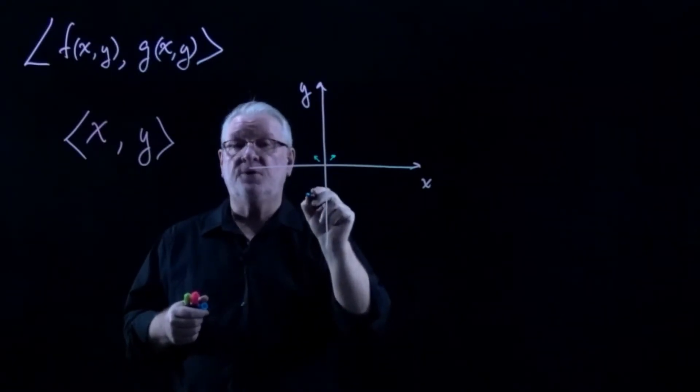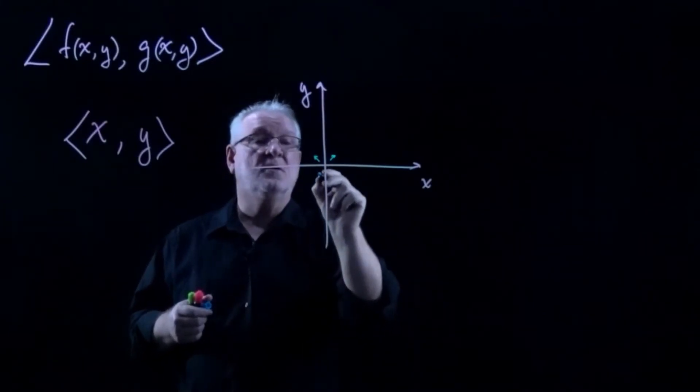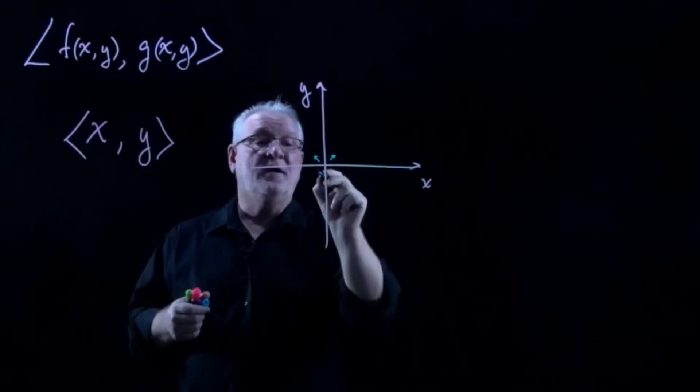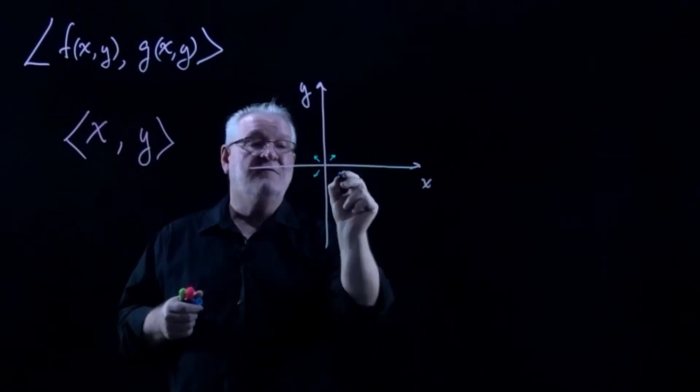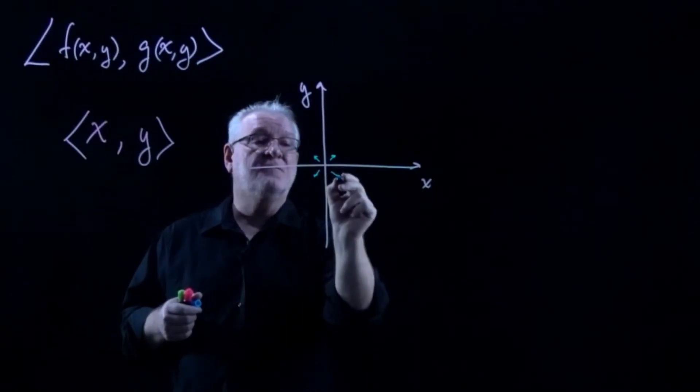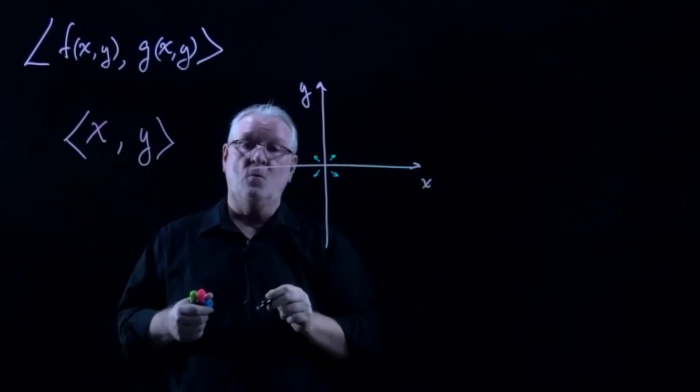If we go into the third quadrant, both the x and y components will be negative. So while we're at that location, we'll definitely be pointing away from the origin. And of course, the same thing in the fourth quadrant will point down and away.